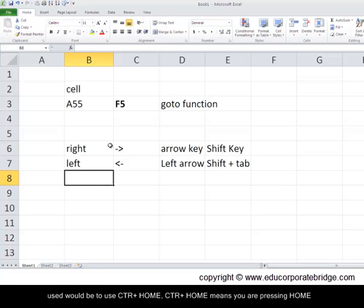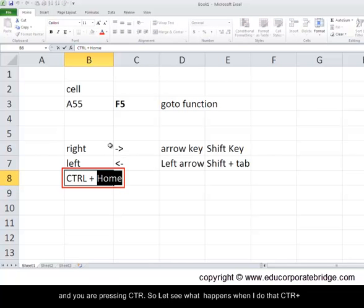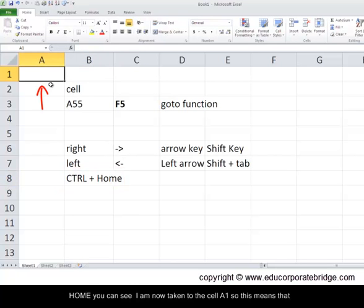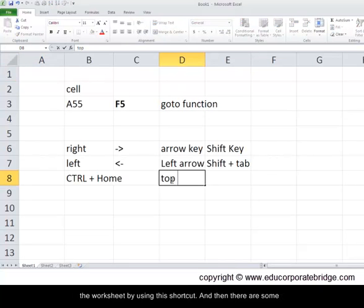There are other shortcuts which may be important. One frequently used would be to use control plus home. Control plus home means you're pressing home and you're pressing control. So let's see what happens when I do that, control and home. You can see I am now taken to the cell A1. So this means that I will be taken to the top of the worksheet.